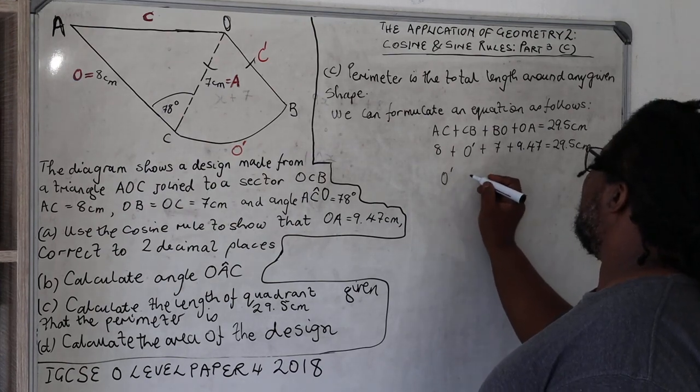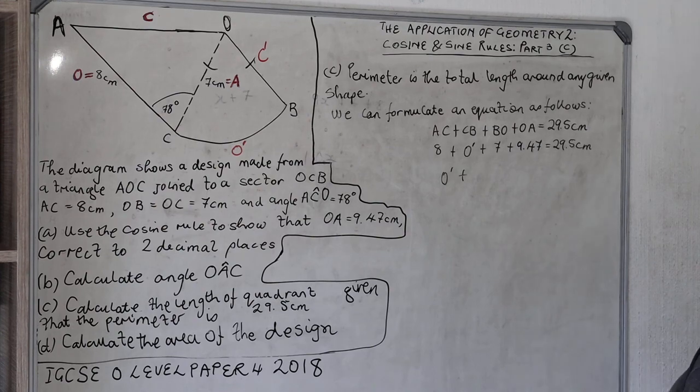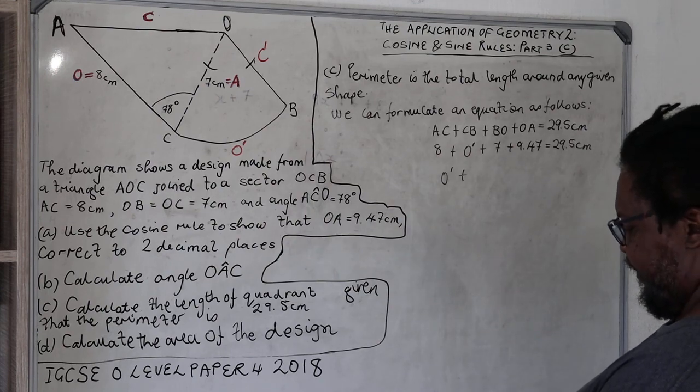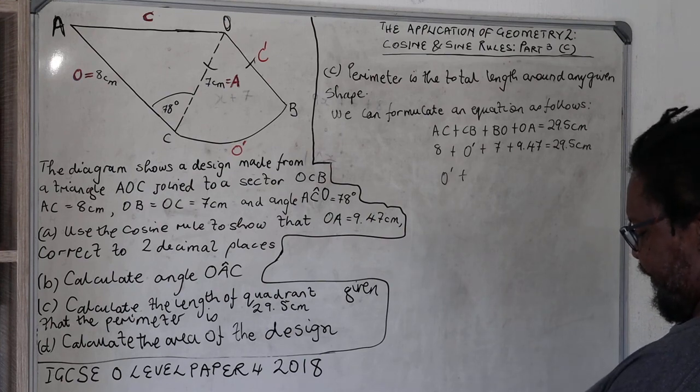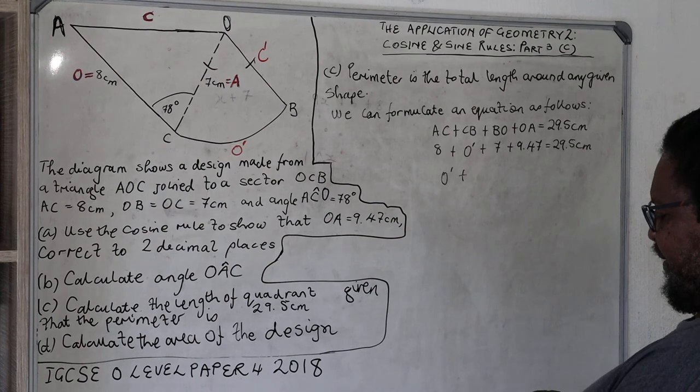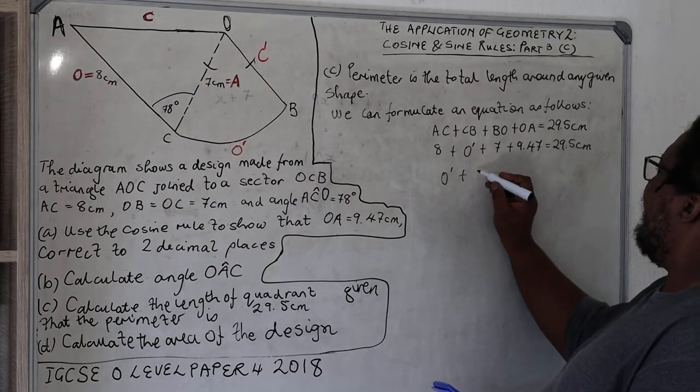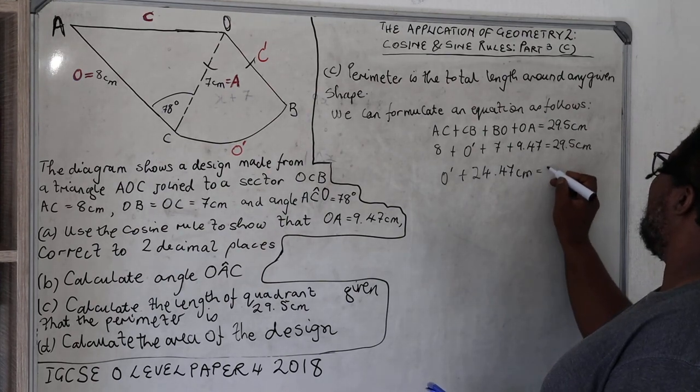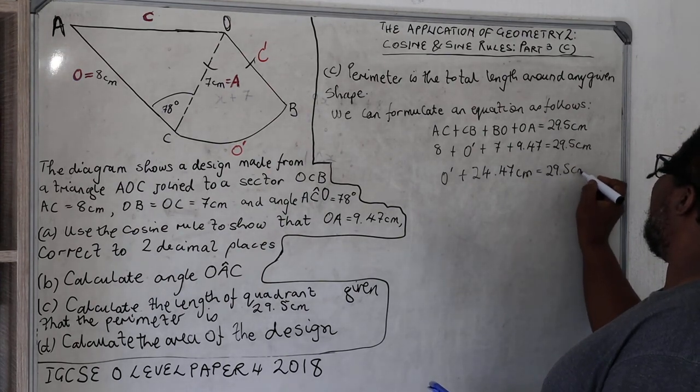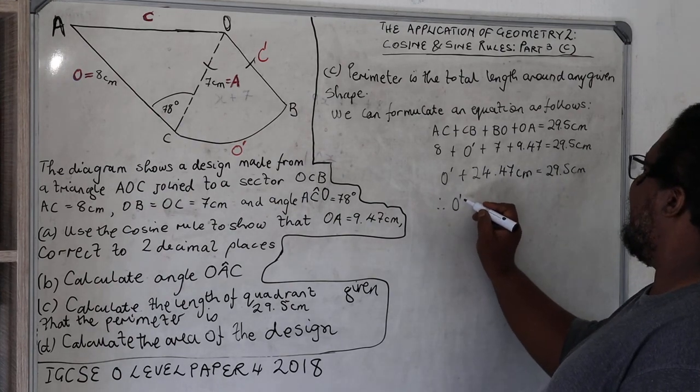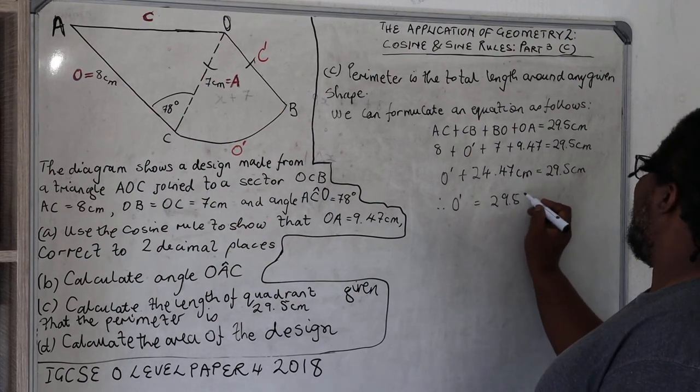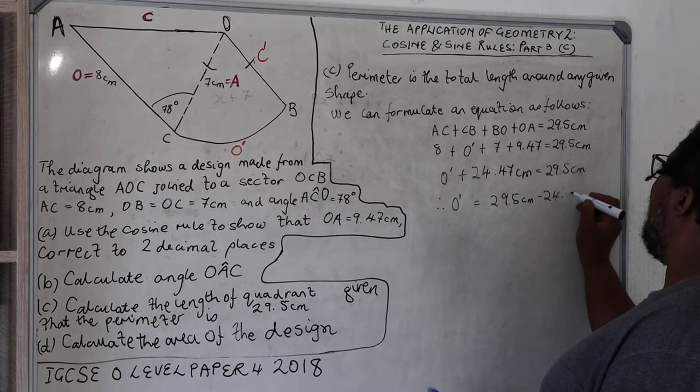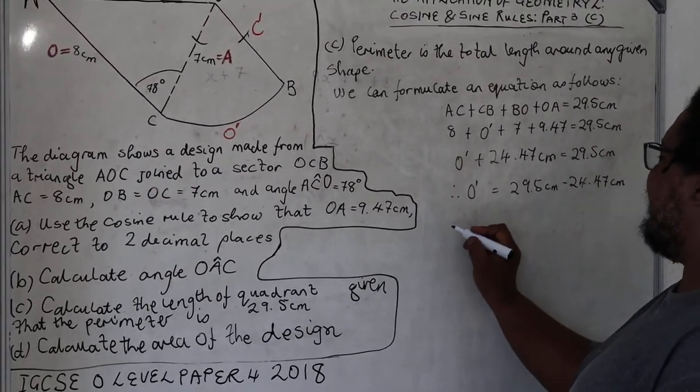Therefore, the arc plus 8 plus 7 plus 9.47... 24.47 centimeters is equal to 29.5 centimeters. Therefore, the arc is equal to 29.5 centimeters minus 24.47 centimeters.